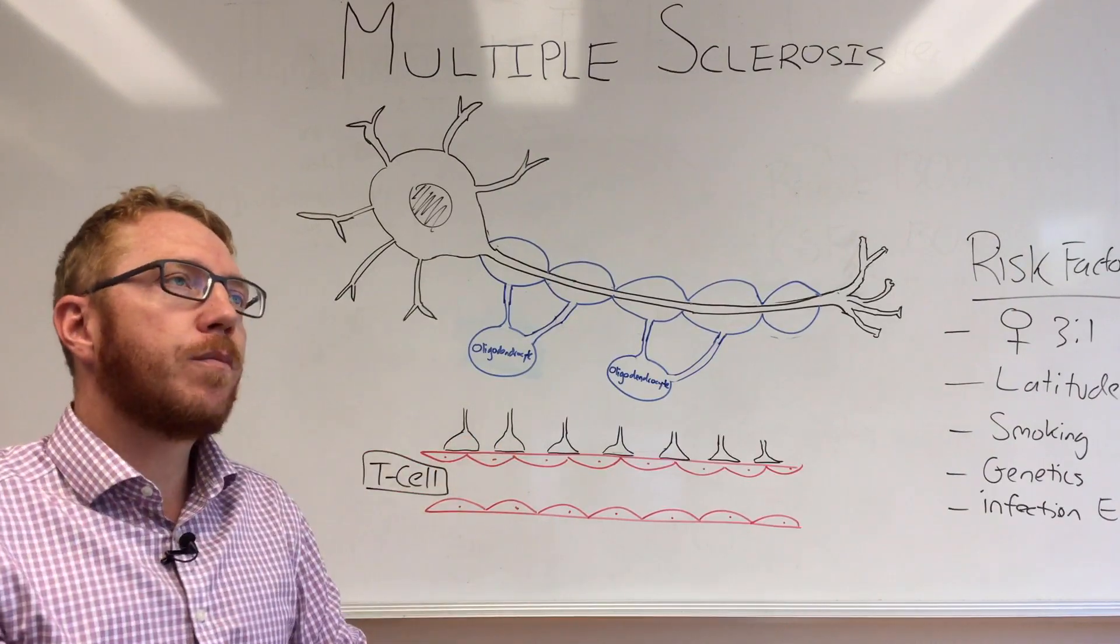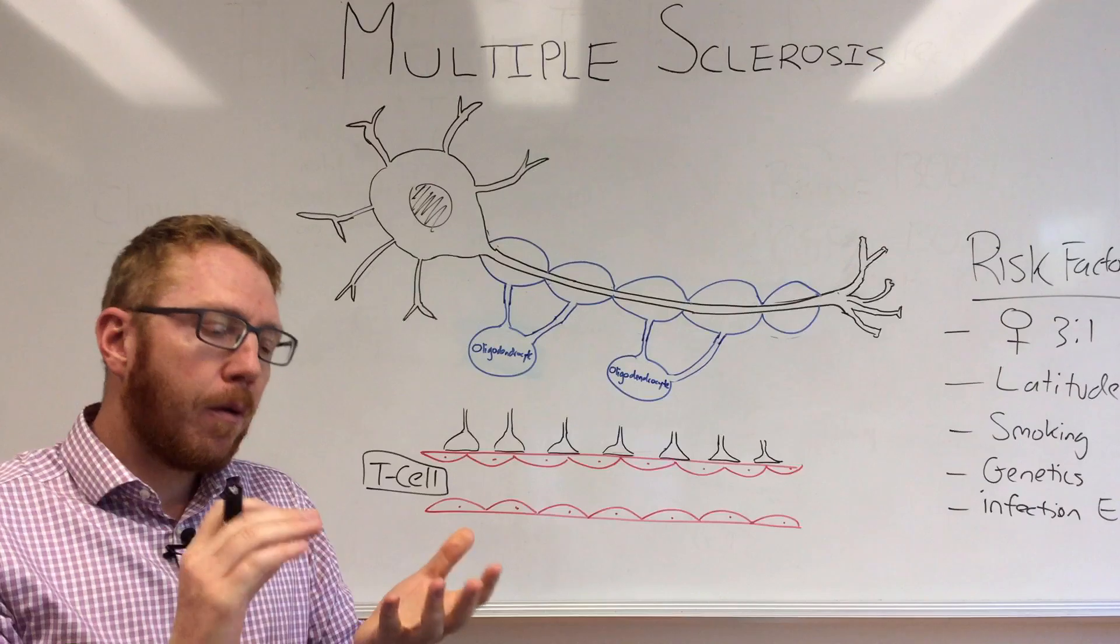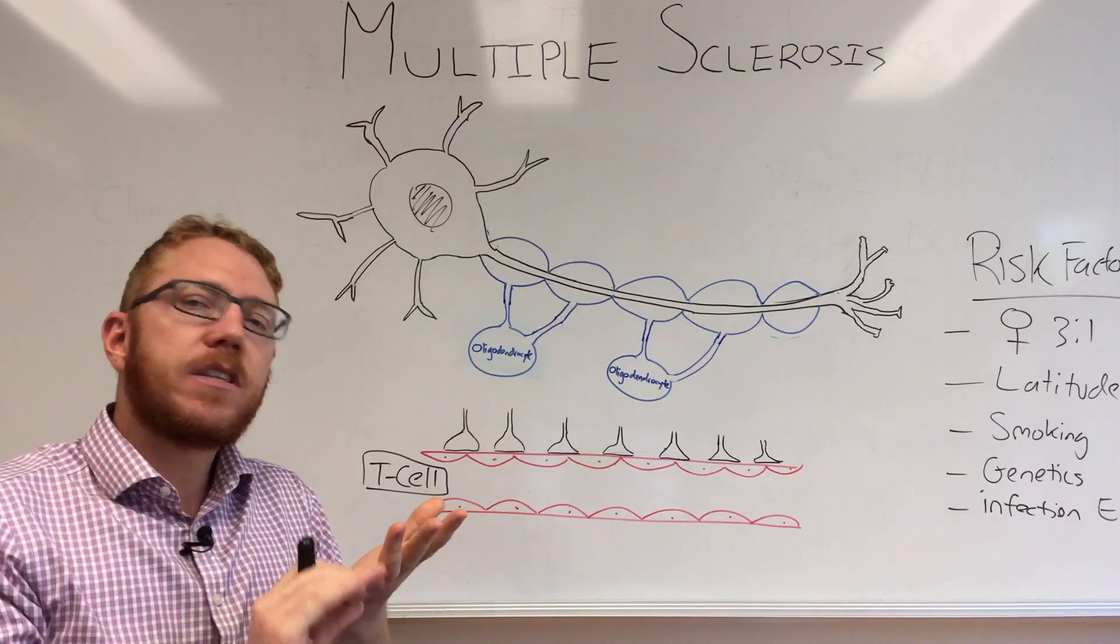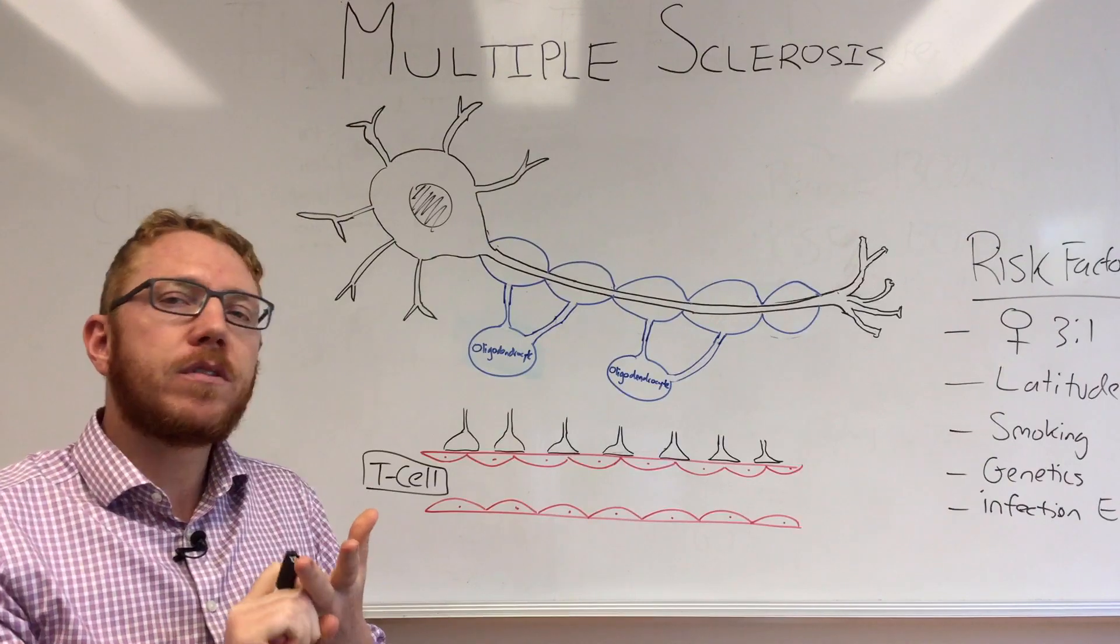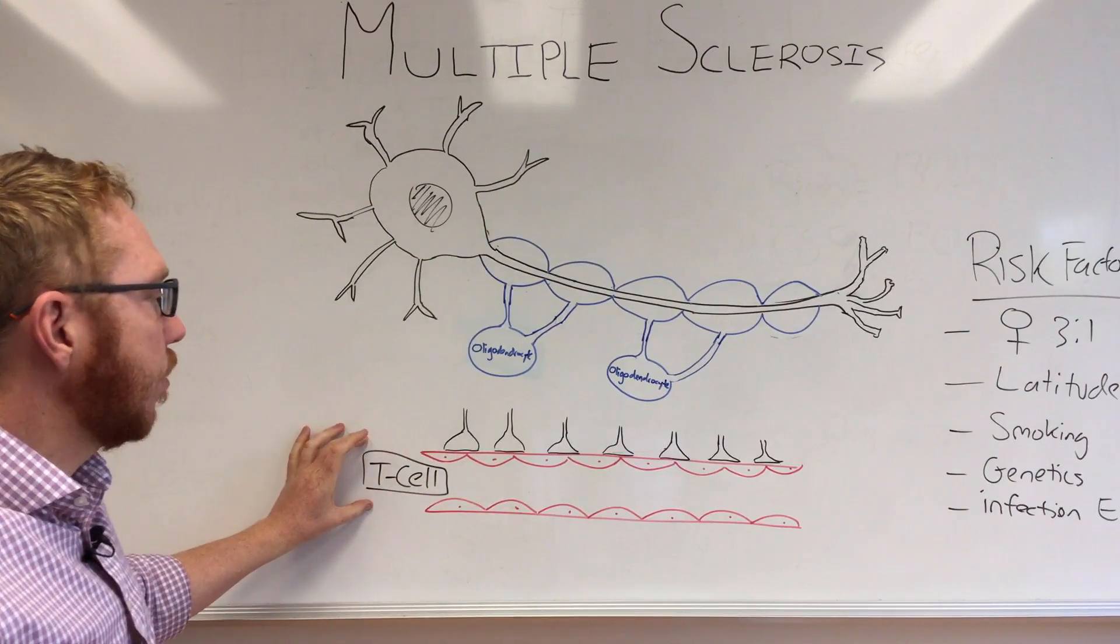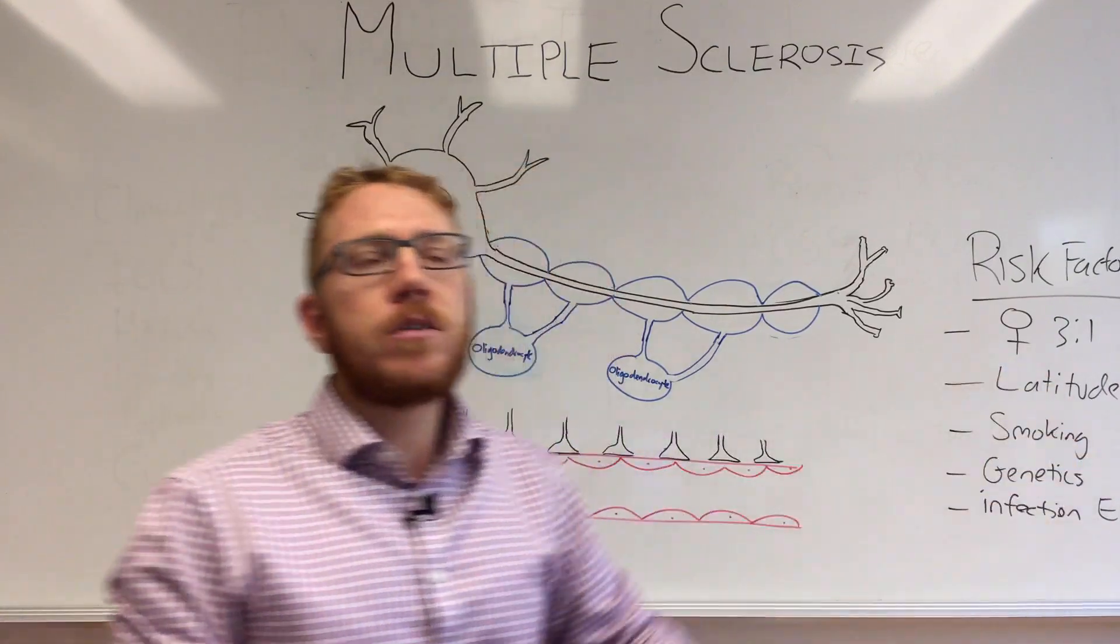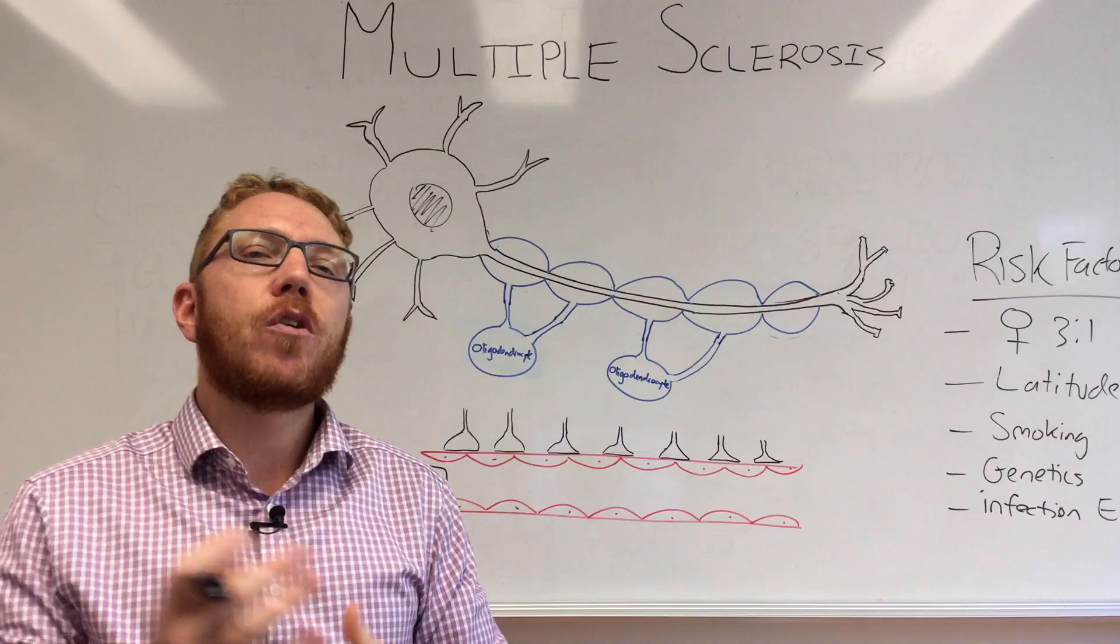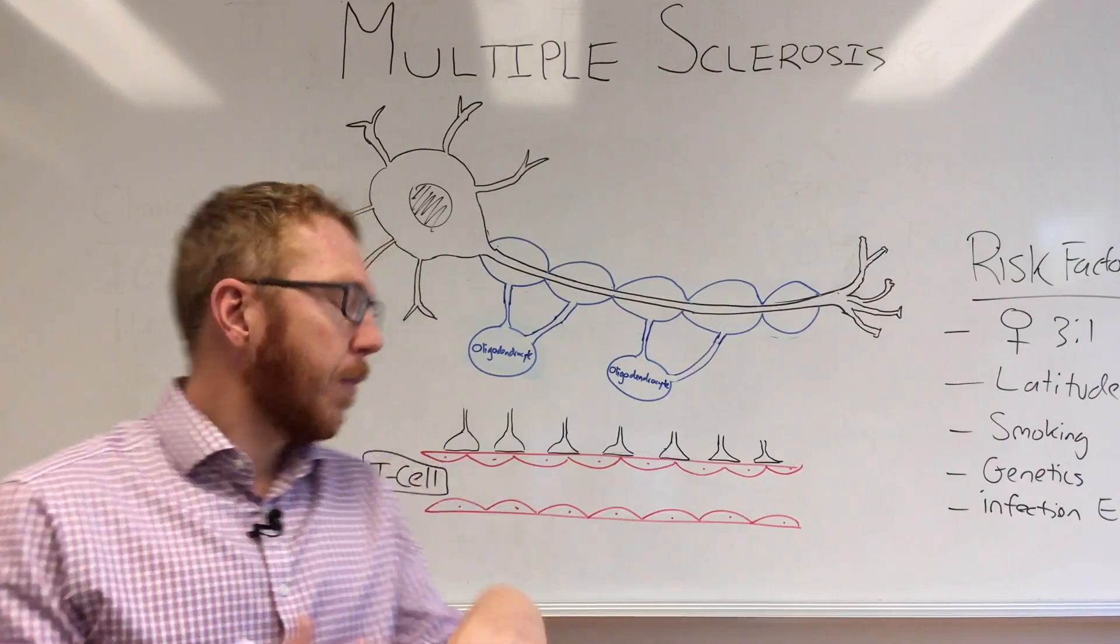The thought behind why the latitude is probably a deficiency in either vitamin D or UV light that seems to put a person possibly in a state to activate T cells. In conjunction with that, we also see that with females - females have a stronger T cell response in their immune system.